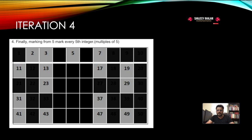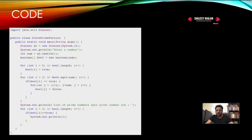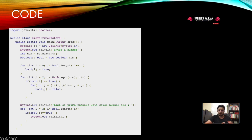After iterating up to the square root of n, only prime numbers remain unmarked. The code uses a boolean array initialized to true for all indices. As the loop iterates up to Math.sqrt(num), it sets the boolean value of non-prime positions to false. After all iterations, the indices still marked true are the prime numbers. This efficiently identifies which numbers up to n are prime.